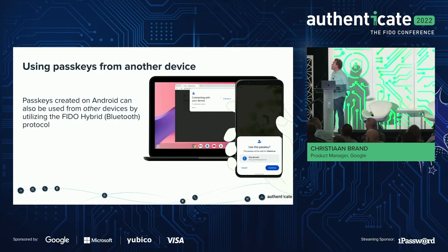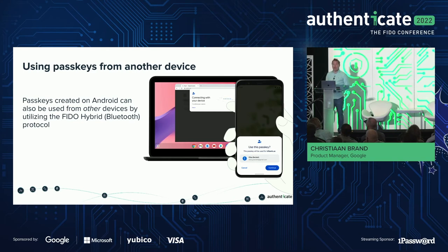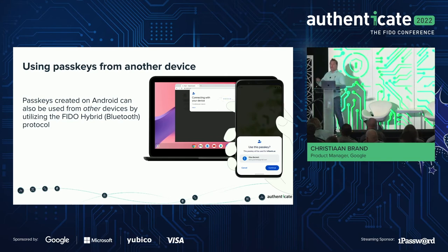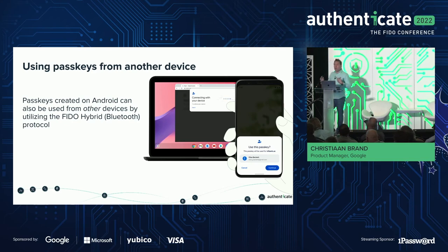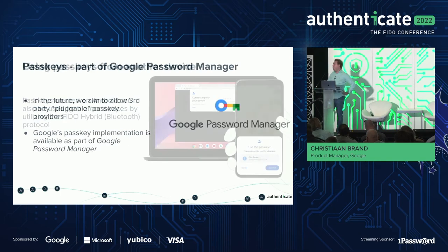Using passkeys from another device — if you're on a device and want to log in using the conditional UI or sign-in-with-passkey button, you can use your phone. Bring your phone close together. In some cases you need to scan a QR code to disambiguate which devices want to talk to one another — in a room like this with lots of phones and laptops, we need to figure out which two should communicate. Once done, the two devices start talking to each other and you can use a passkey from the phone on your other device.